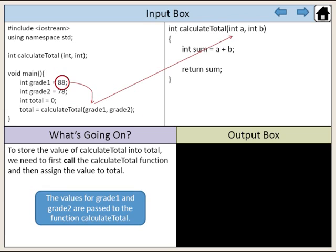The values for grade1 and grade2 are passed to the function calculateTotal. The value of grade1 is passed to the first argument. The value of grade2 is passed to the second argument.